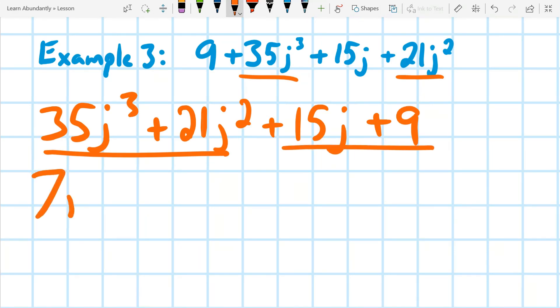I see I have a 7j squared, and that leaves me with 5j plus 3. And I have a 3 I can take out of the second one,